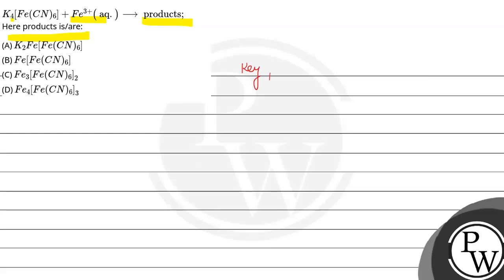If I am talking about the key point here, the key point is reactions of Fe plus 2 or Fe plus 3 ions with potassium ferrocyanide.